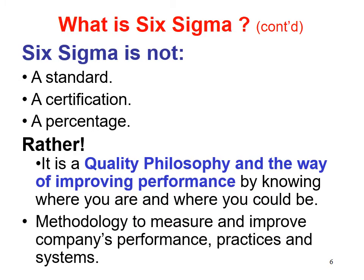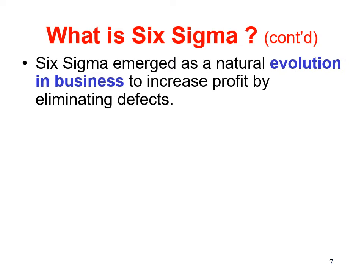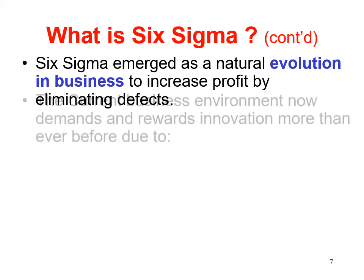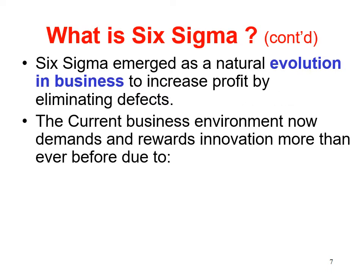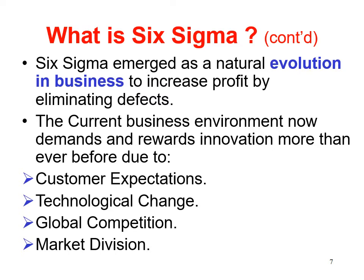Six Sigma is a methodology to measure and improve companies' performance, practices, and systems. Six Sigma emerged as a natural evolution in business to increase profit by eliminating defects. The current business environment demands and rewards innovation more than ever before, driven by customer expectations, technological change, global competition, and market division.